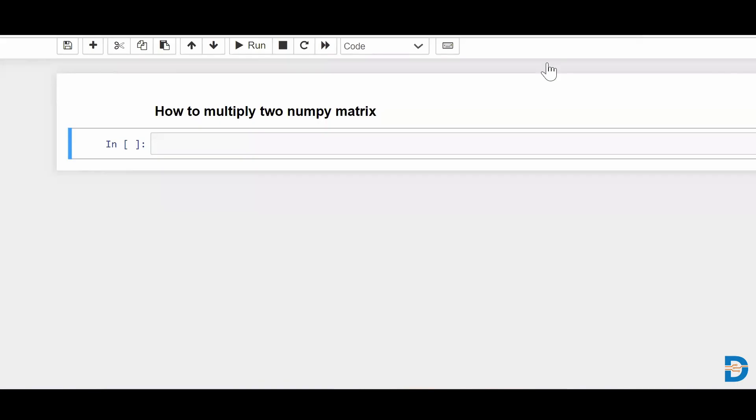Hello guys, Nesarkh from DataMites. So today's NumPy interview question is how to multiply two NumPy matrices together. So essentially we have two NumPy matrices and we are supposed to multiply them. How do we do it? Let's see.